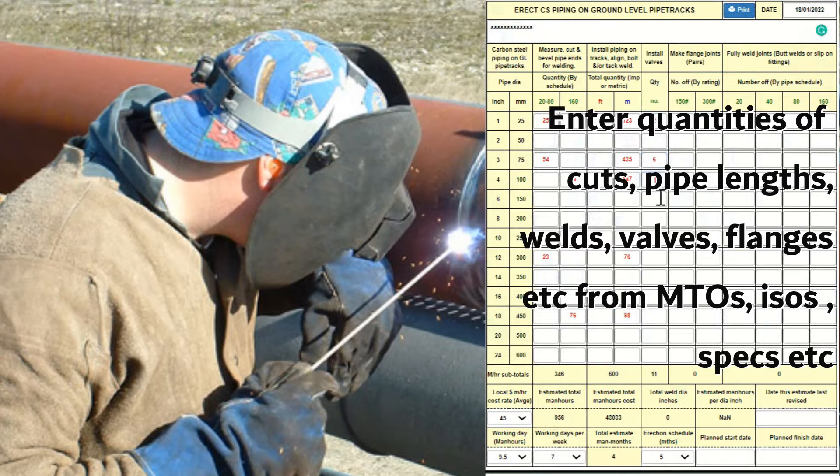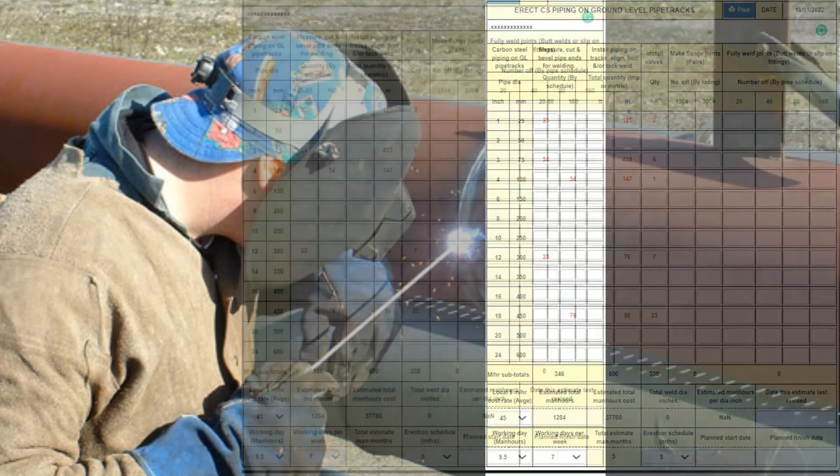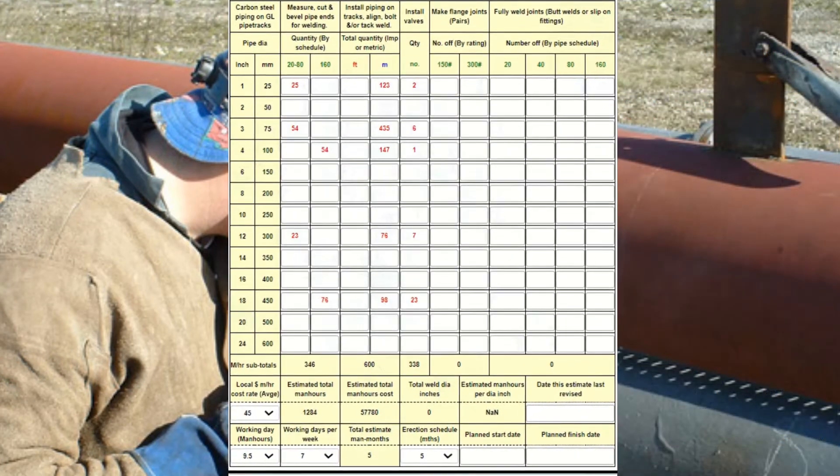The results are estimates of total man hours and total cost of same, total man months, total weld diameter inches, and estimated man hours per diameter inch of pipe welds.